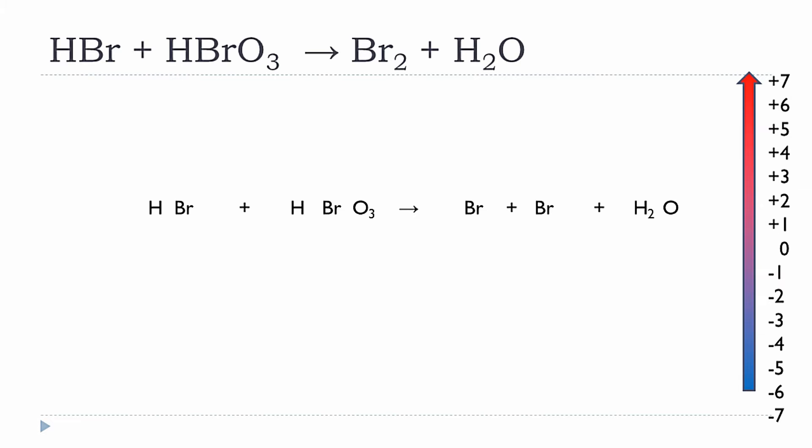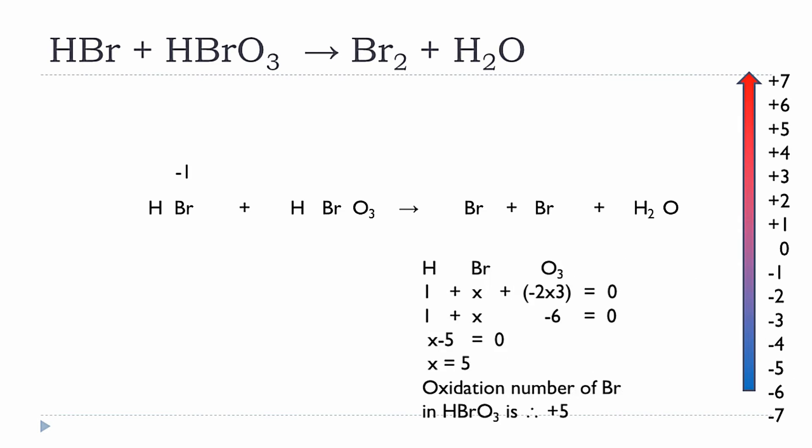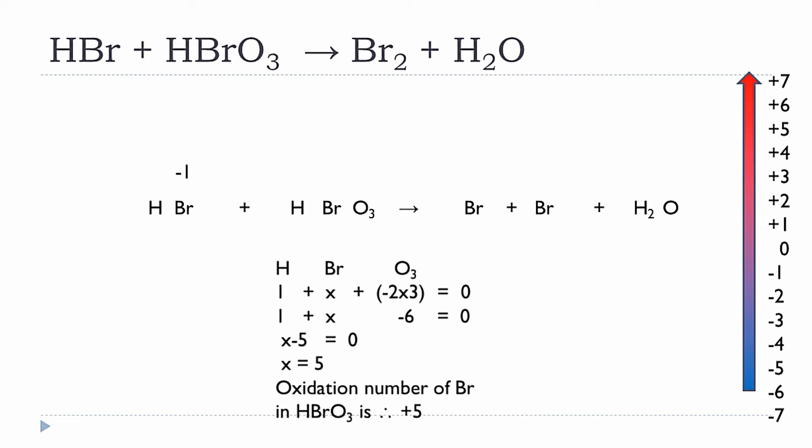The oxidation number of hydrogen in a common compound is always plus one — this is not a metal hydride or molecular hydrogen, so no exception applies. In HBr, which has a net charge of zero, the oxidation number of Br is minus one. In HBrO3, hydrogen is assigned plus one, bromine is assigned x, and oxygen is assigned minus two because this is a regular compound — not a peroxide or fluoride.